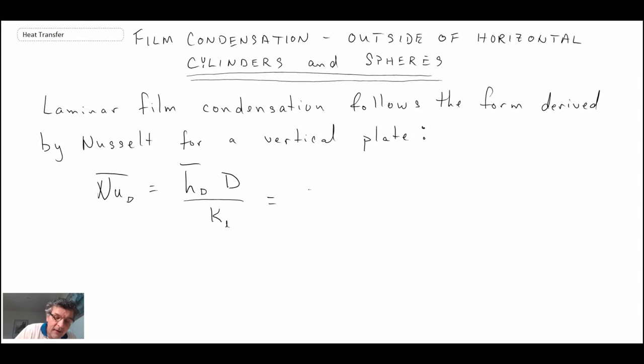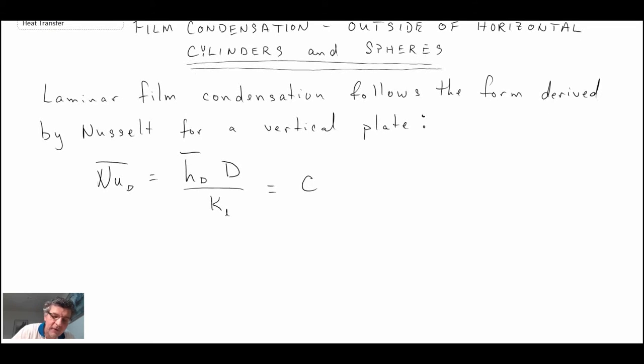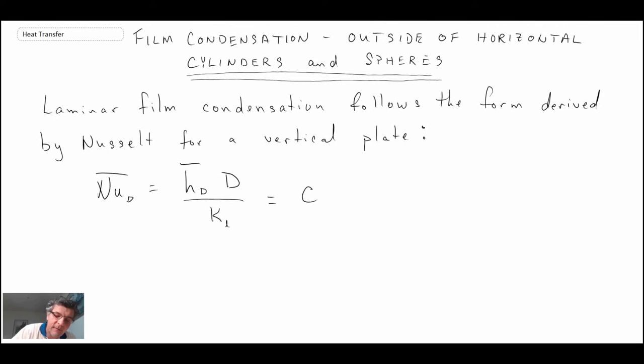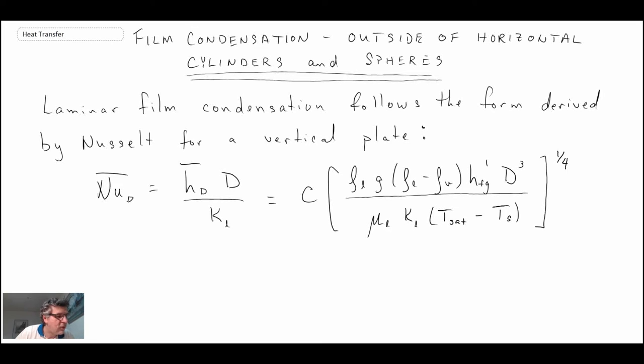Then there is a constant, and that constant depends on whether we're looking at a cylinder or a sphere. And from there, the relationship would be the same as what we saw for the flat plate.